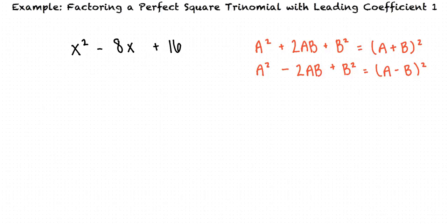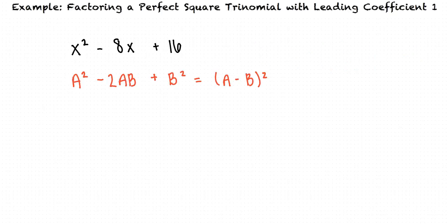If we line up our given perfect square trinomial with formula 2, we see that a equals x and b equals 4 because 4 squared equals 16.